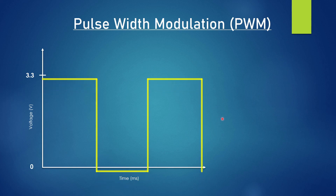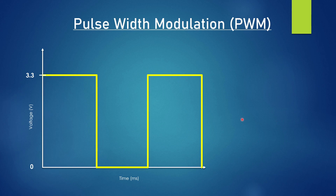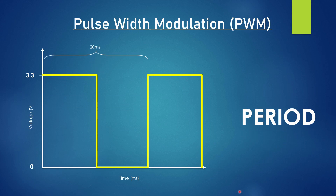In comes pulse width modulation — this is actually the scheme invented to solve that problem. To talk about pulse width modulation, first we have to define a few terms. The first being the period. The period of your pulse width modulation is going to be the length of one cycle — that's from high, letting it go low, and then back to high again at that rising clock edge. That's denoted in time, and here it's 20 milliseconds.